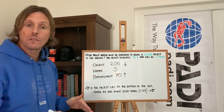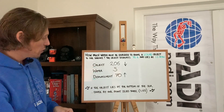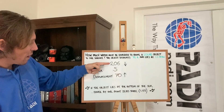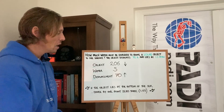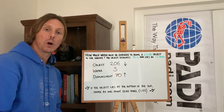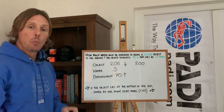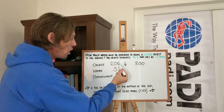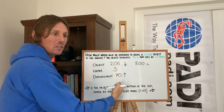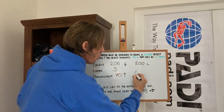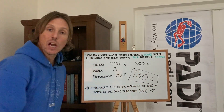We have all three pieces of data, so we're going to answer the question. We sing the song: if the object lies at the bottom of the sea — which it does — divide by 1.03. So 206 divided by 1.03 gives you 200. We've now converted kilograms into litres. We take the 70 litres from 200, which gives us 130 litres. That is your answer.